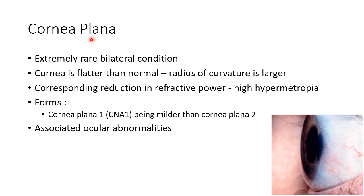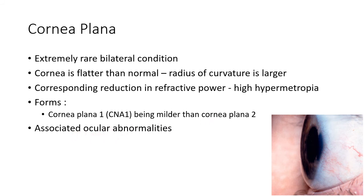Now let us discuss about cornea plana. It is an extremely rare bilateral condition. In cornea plana, the cornea is flatter than normal, so the radius of curvature is larger. This picture shows a case of cornea plana. This will lead to corresponding reduction in refractive power, eventually leading to hypermetropia. There are two forms: cornea plana 1, abbreviated as CCP1, which is milder than cornea plana 2. Cornea plana is also associated with other ocular abnormalities.